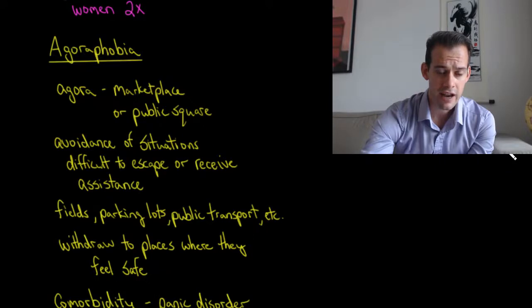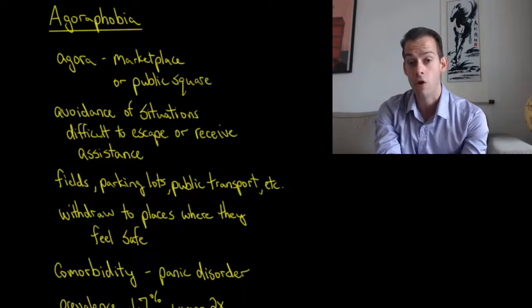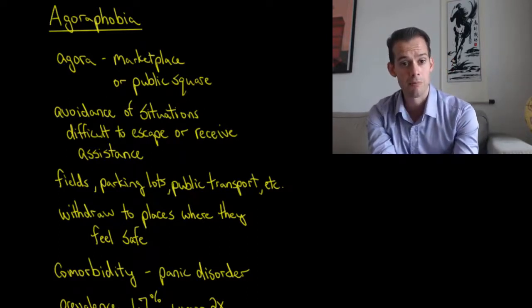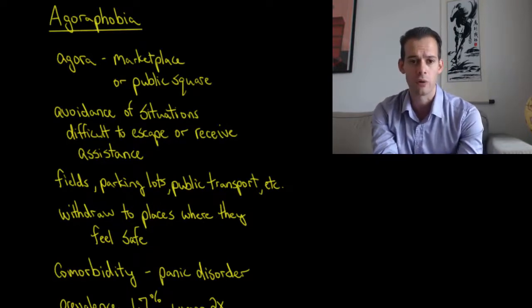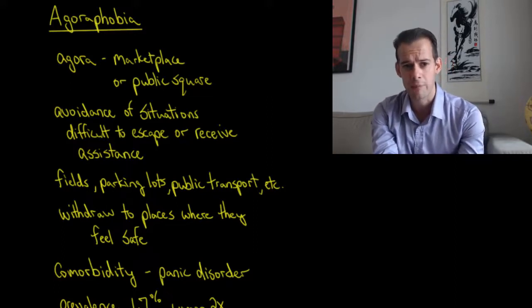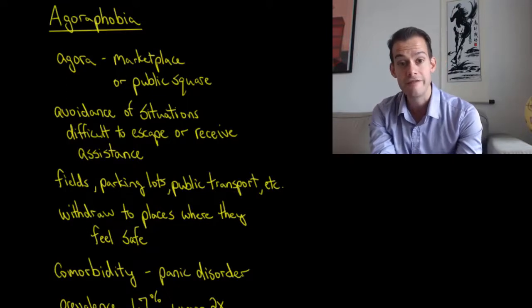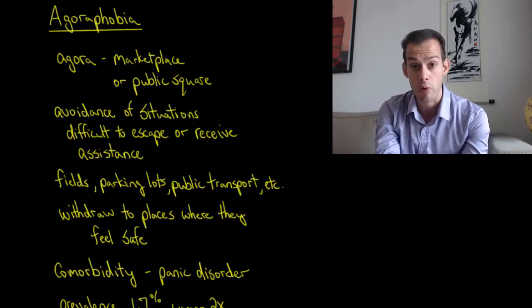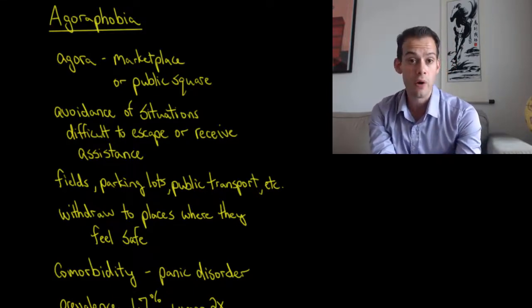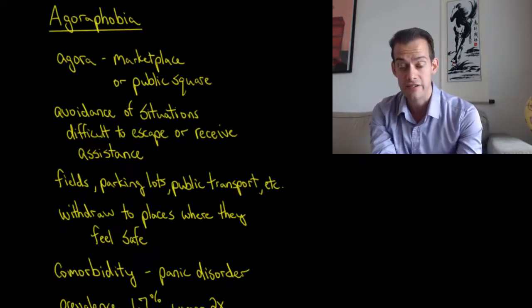Now the next anxiety disorder we have is a specific phobia that has its own diagnostic label. And this is agoraphobia. And so agora is the Greek term for marketplace or public square. And so you'll sometimes see this translated as fear of the marketplace or fear of open spaces or something like that. But what it refers to is avoidance of situations where the person feels they'd have difficulty escaping or receiving assistance if they needed it. And so that could be something like fields or parking lots or it could be crowded situations like public transport or sports stadium or something like that. And so the person will avoid those situations. They withdraw to places where they feel safe, where they feel that they could escape or receive assistance if necessary.